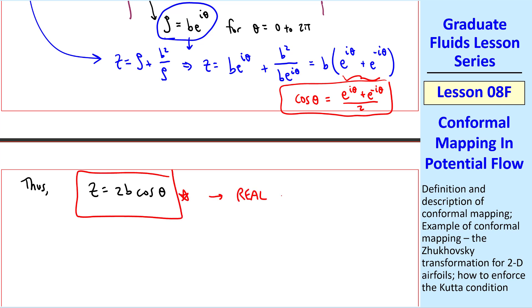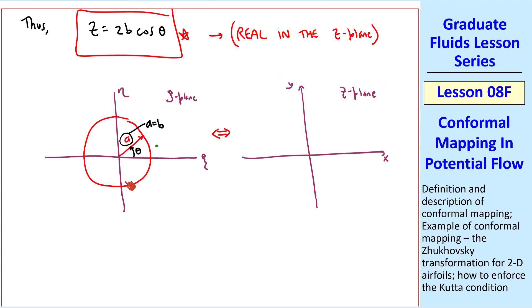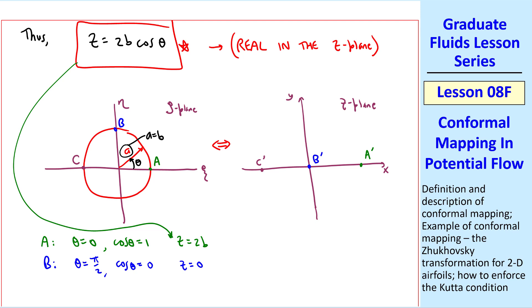What's interesting about this is that it's real in the z plane, which means that all points on the circle in the zeta plane, even though they're complex, must map onto the z axis or the real axis of the z plane. We can look at various points to see how this maps. At point A, theta equals 0. Cosine theta is 1. Therefore, z equal 2b. I'll call that point A prime on the z plane. Similarly, at point B, theta is pi over 2. Cosine theta is 0. So z equals 0. B prime will be here. You can do this for various points. C maps to C prime at negative 2b and D also maps to 0 on the z plane. Thus, the circle in the zeta plane maps through the Joukowsky transformation into a flat line from negative 2b to 2b in the z plane.